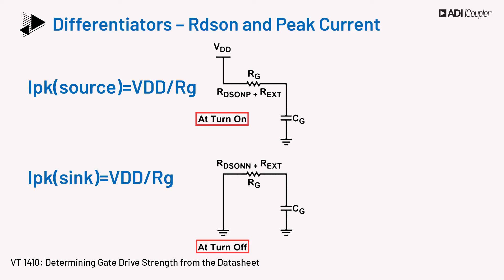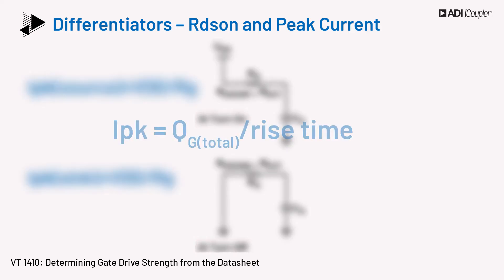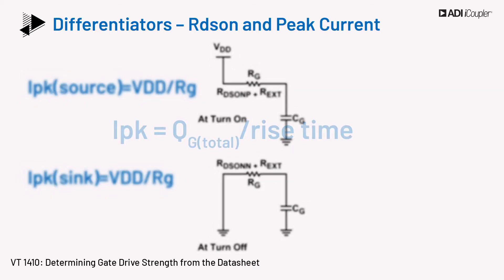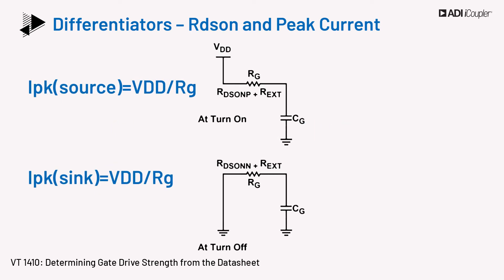The current required for an application can be calculated from IPK = QG_total / rise time. As long as the driver can deliver the peak current to meet this requirement, the driver can be considered for an application. As observed, the peak current is heavily dependent on the on-resistance of the NMOS and PMOS MOSFETs in the driver output stage. RDS-on is therefore the true basis for peak current.